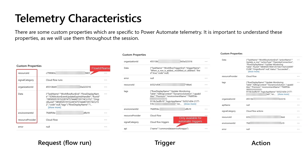All the properties are almost the same. Resource ID represents the flow ID. Signal category differentiates cloud flow runs, cloud flow triggers, and cloud flow actions. Organization ID and Environment IDs are related to the Dataverse instance. Resource provider is really important — it will help filter out Power Automate telemetry if you are pushing Dataverse telemetry to the same App Insights instance. The data object contains flow metadata information such as flow display name, run ID, XRM workflow ID, created by, etc.